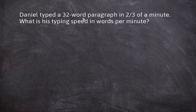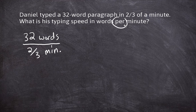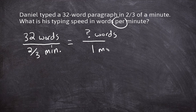Daniel typed a 32-word paragraph in two-thirds of a minute. What is this typing speed in words per minute? The given rate is 32 words in two-thirds of a minute, and the problem is asking us to change this to a unit rate, indicated by the word 'per,' which means per one minute.